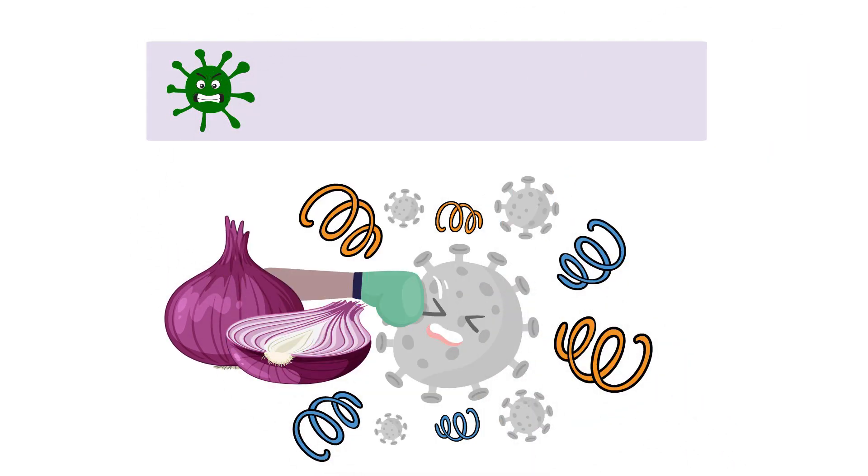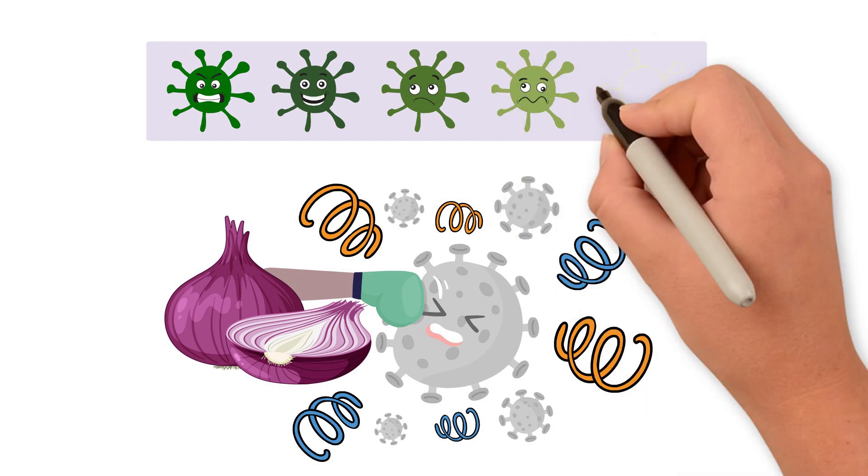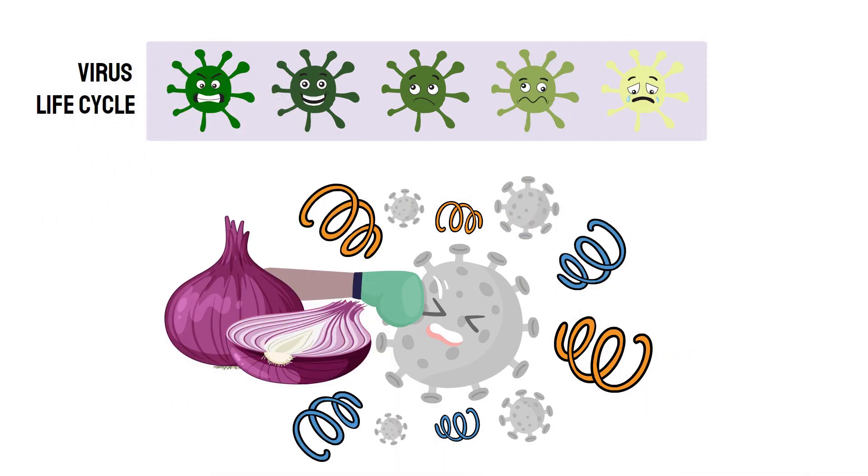By disrupting the structural integrity of viral proteins through enzymatic degradation and inhibiting key steps in the virus life cycle, onions effectively impede viral replication and reduce infectivity.